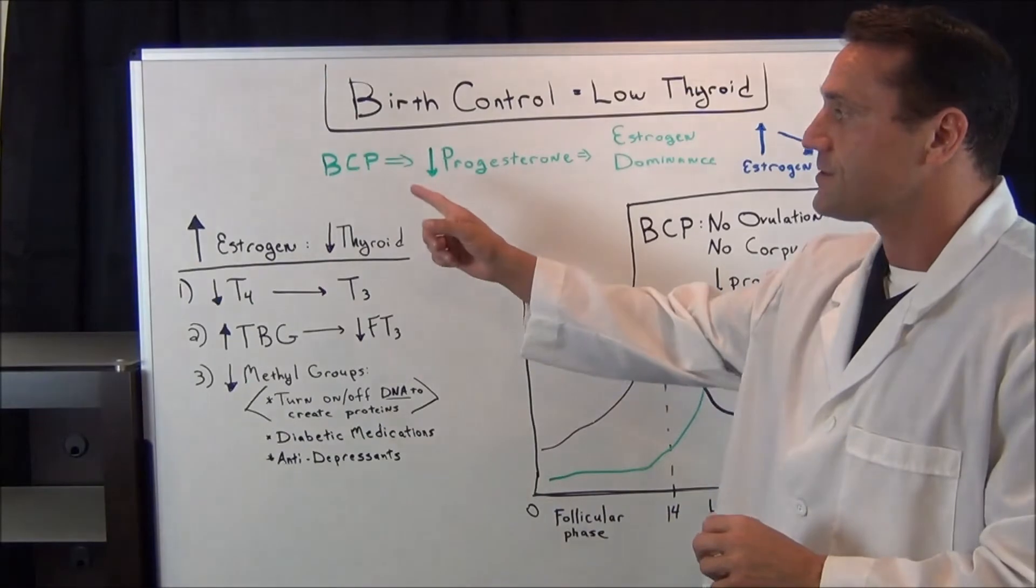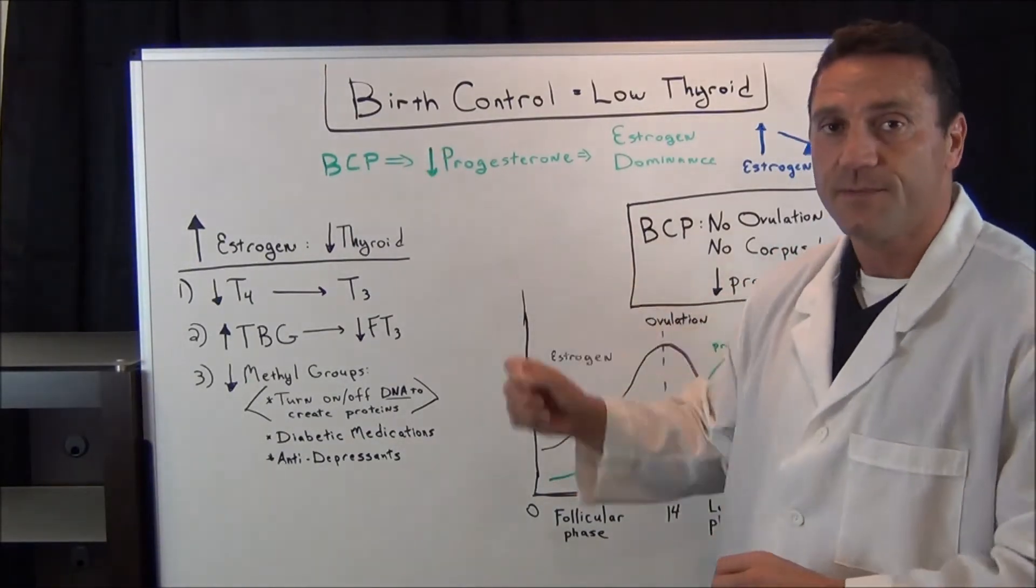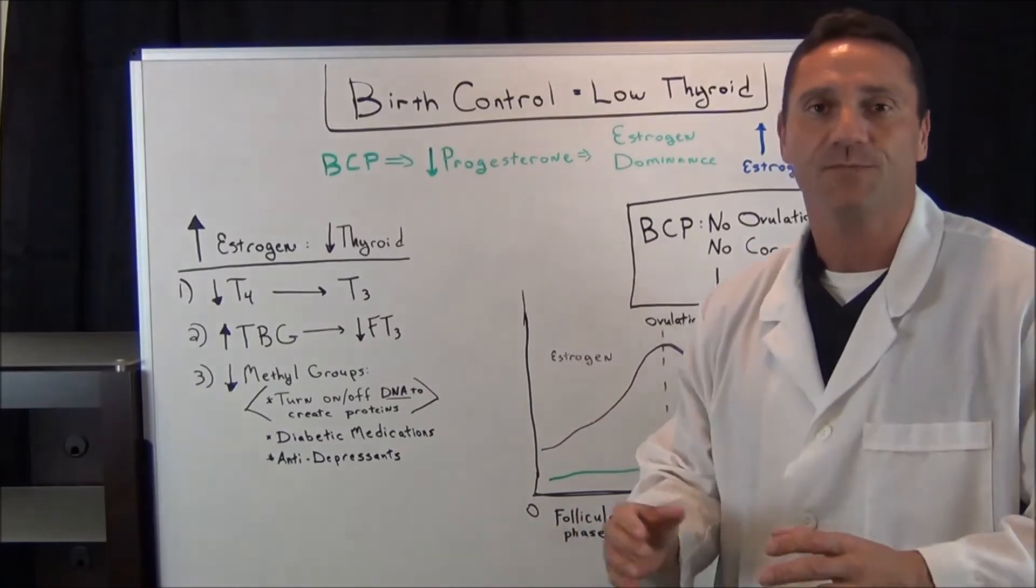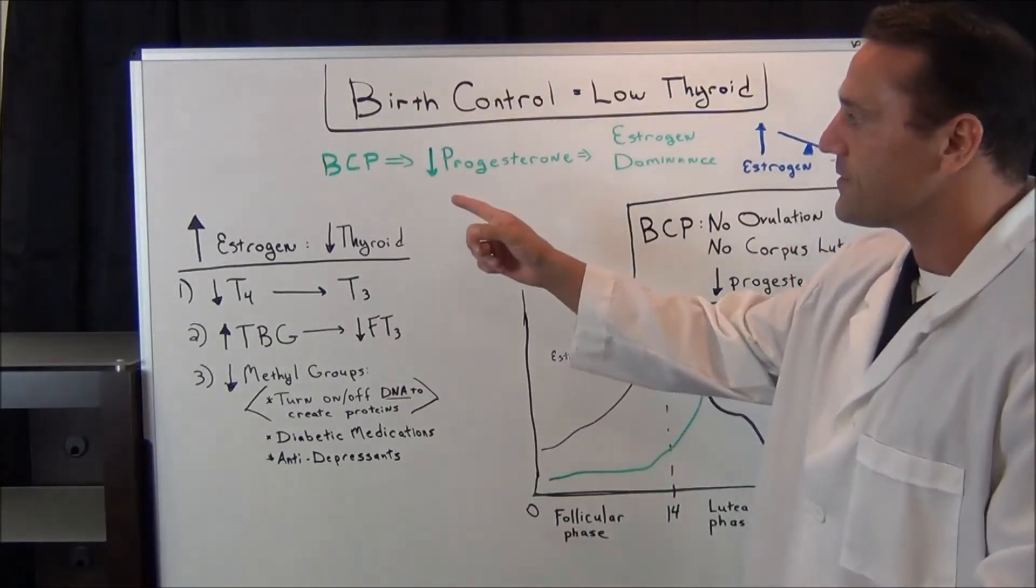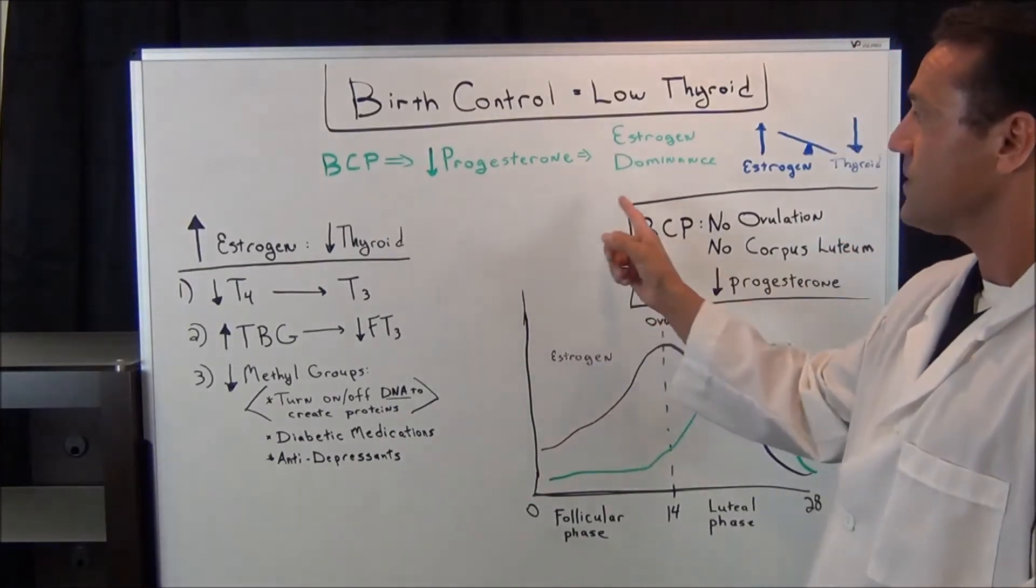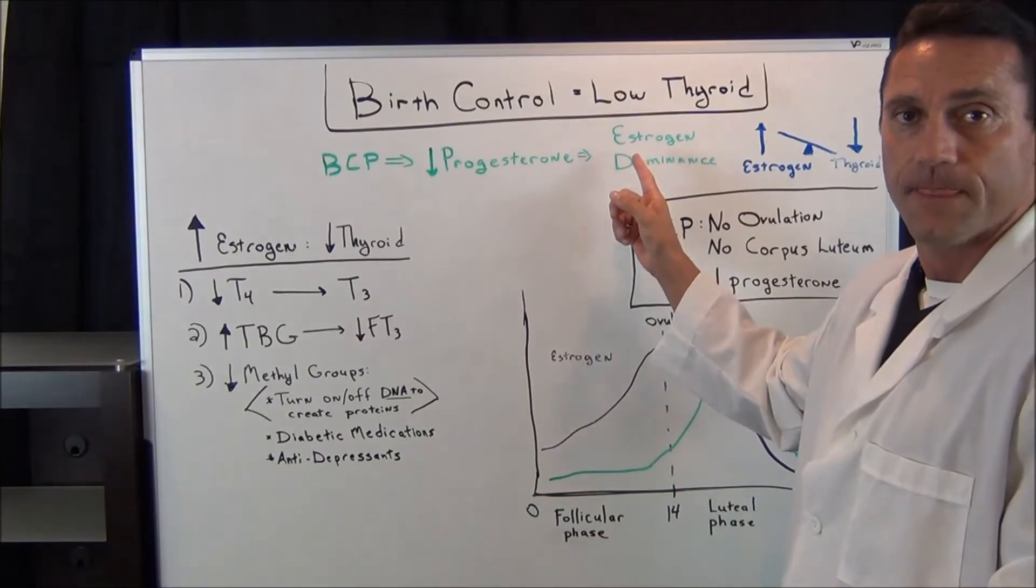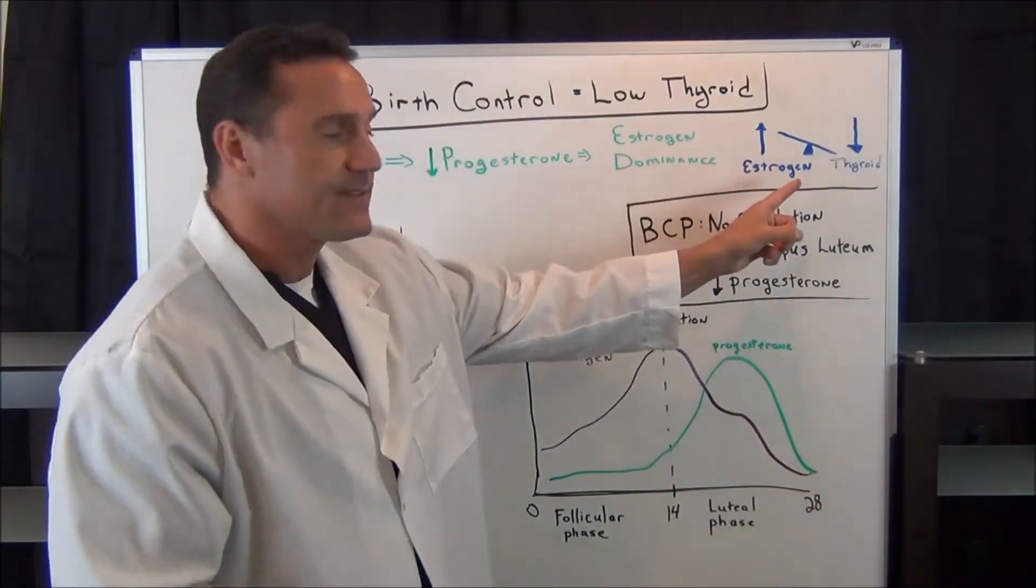So what happens when you're on birth control, that is estrogen. And the average female makes about 20 to 25 times more progesterone in their system than estrogen. So when you're on birth control pills, you're actually decreasing your progesterone levels, which in turn is making you estrogen dominant. And when you're estrogen dominant, it decreases your thyroid function.